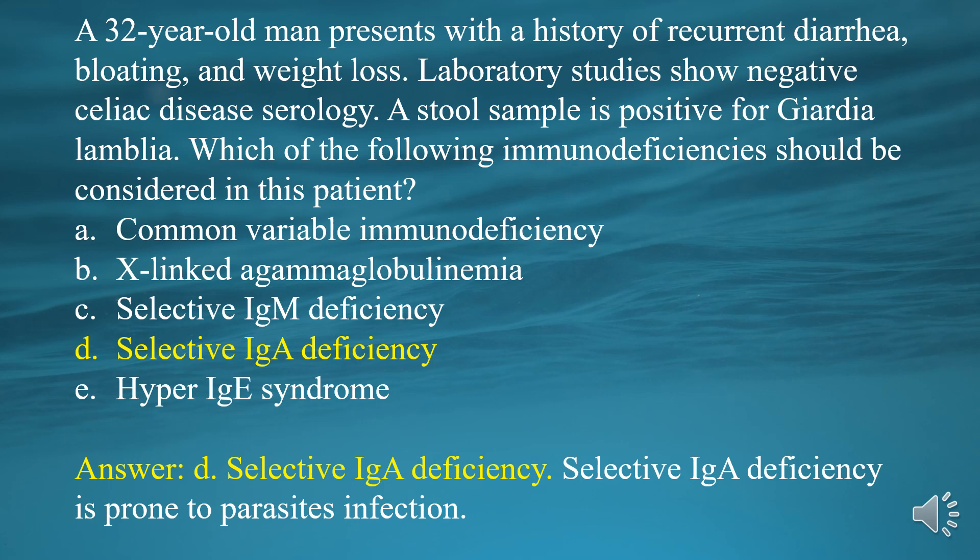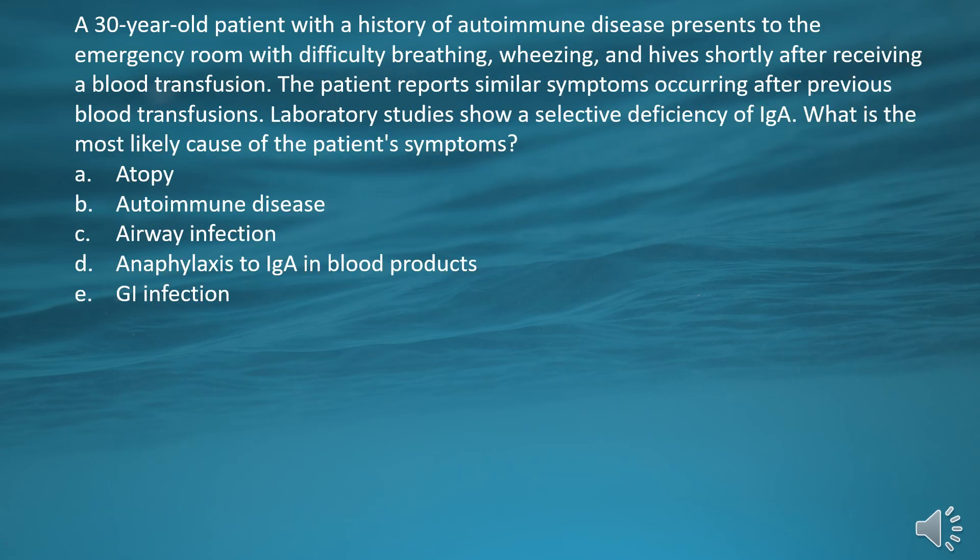Selective IgA deficiency is prone to parasite infection. A 30-year-old patient with a history of autoimmune disease presents to the emergency room with difficulty breathing, wheezing, and hives shortly after receiving a blood transfusion. The patient reports similar symptoms occurring after previous blood transfusions. Laboratory studies show a selective deficiency of IgA. What is the most likely cause of the patient's symptoms?